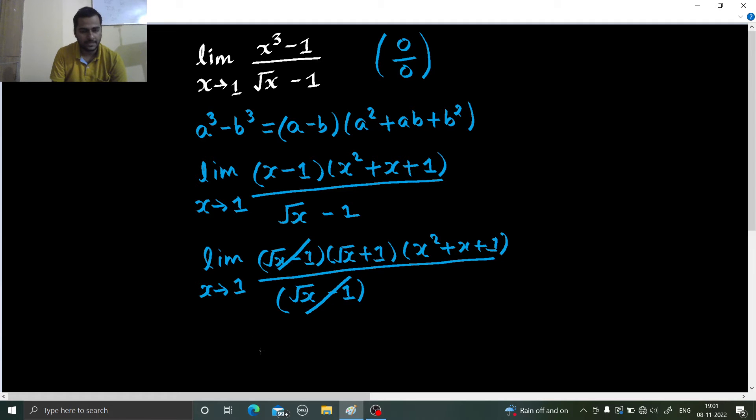We will get 1 plus 1 from the first bracket which is 2, and 1 plus 1 plus 1 which is 3 from the second bracket, giving us 6 as our answer.